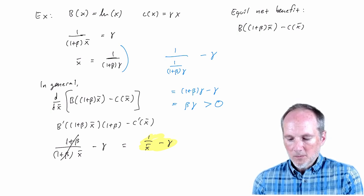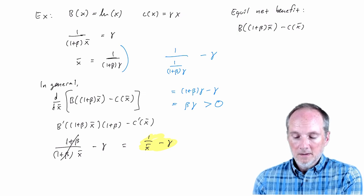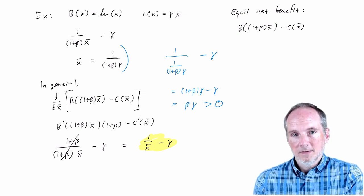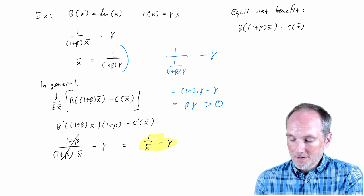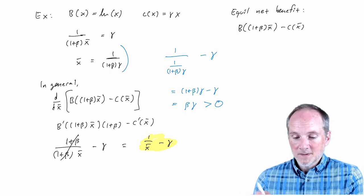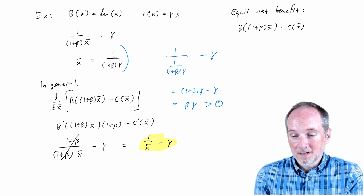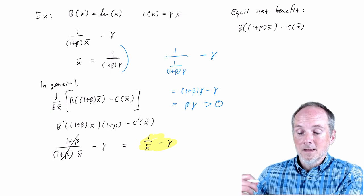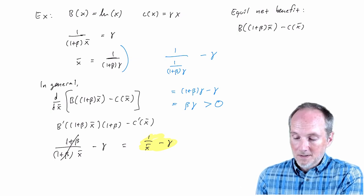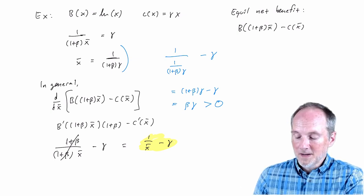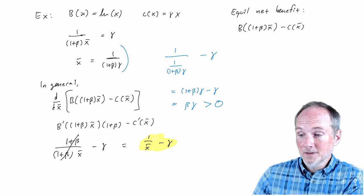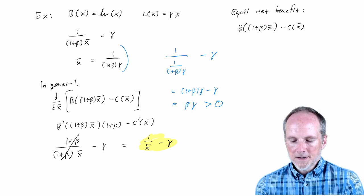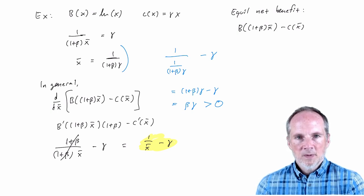So that's how we can show in this example that both decision makers could be better off if they just could both increase their activity levels. Obviously, the weird thing about that is that conceptually they could, there's no problem with them increasing their activity levels. It's just that they don't have the incentive to do so. Right? If the other guy were increasing their activity level, then I would just want to decrease mine. So that's the idea of under provision of public goods.